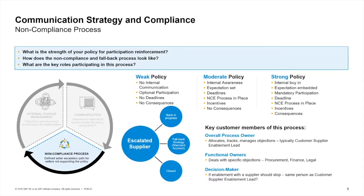The third key element is a non-compliance process for non-responsive or non-compliant suppliers. First, your organization needs to determine your policy with regards to enablement on the Ariba network — weak, moderate, or strong — along with associated consequences. Ensure that you have an overall process owner who manages and triages supplier objections, functional owners who manage specific objections, and a decision maker who determines if enablement should continue with the supplier.